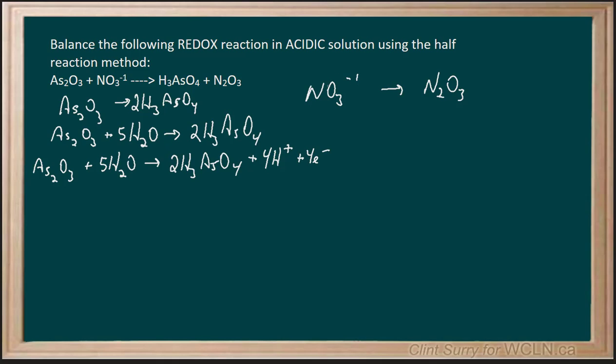On the nitrogen half-reaction here, I can see there are two nitrogens on the right, but only one on the left. So my first step will be to balance that by putting a 2 here. The next step will be to balance the oxygens. I can see 6 on the left and only 3 on the right, so I'm going to add some water. I get 2NO₃⁻ giving me N₂O₃ plus 3H₂O.